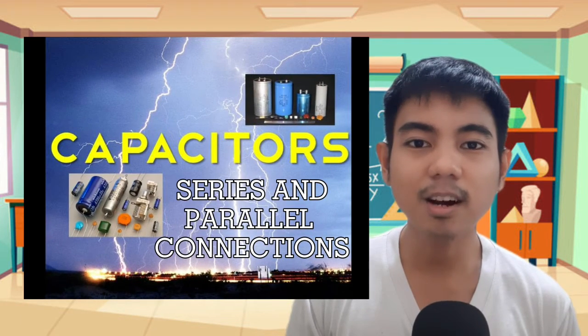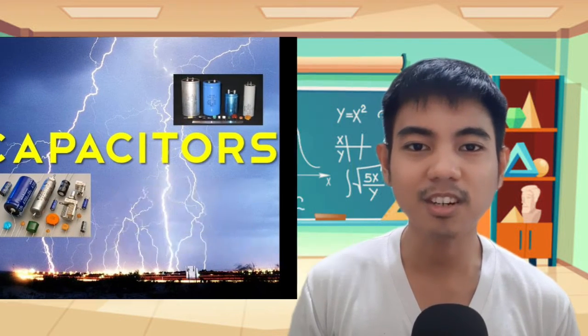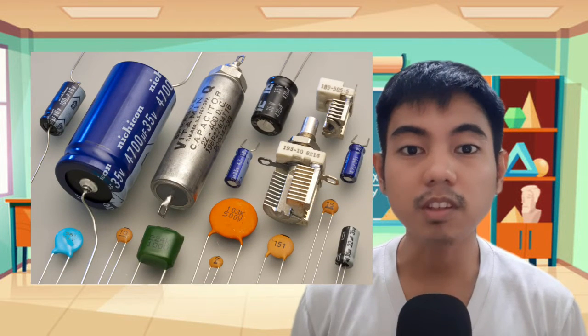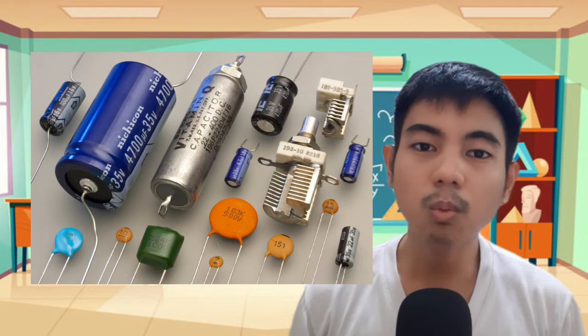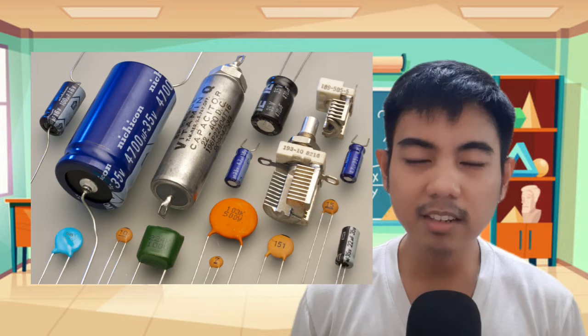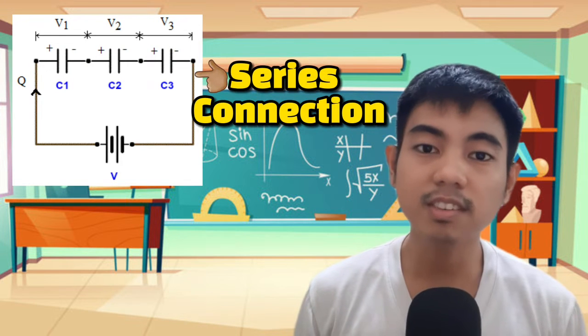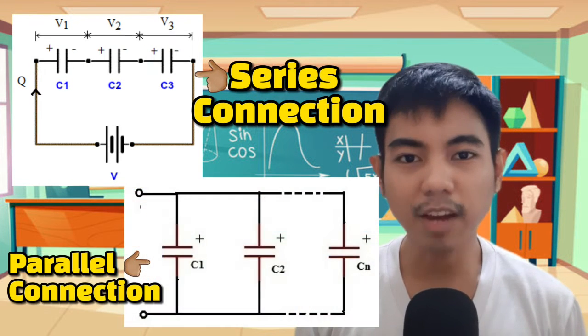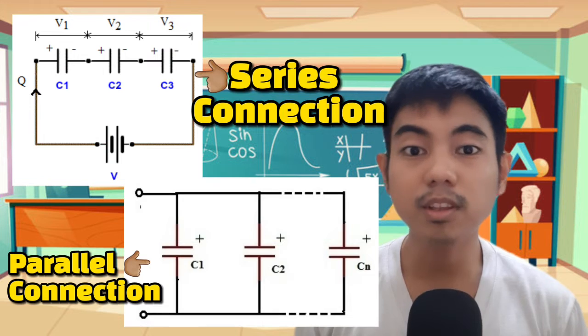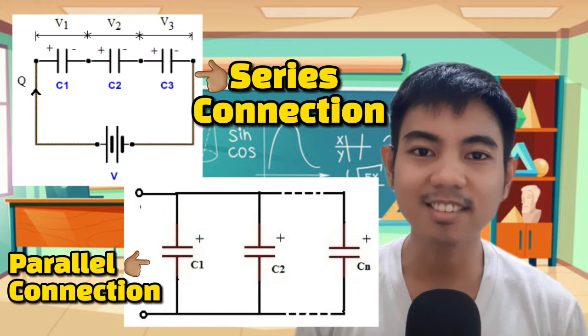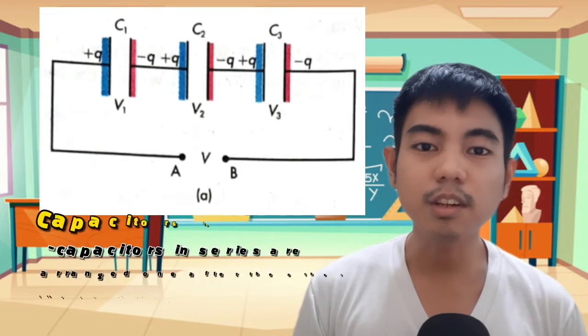Let's learn more about combinations of capacitors. As you have known from our previous lesson, capacitors are one of the important elements in an electrical circuit. And just like any element in the electrical circuit, it can be connected in either series or parallel fashion. Let's learn more about the two types of connections. First, the series combination.